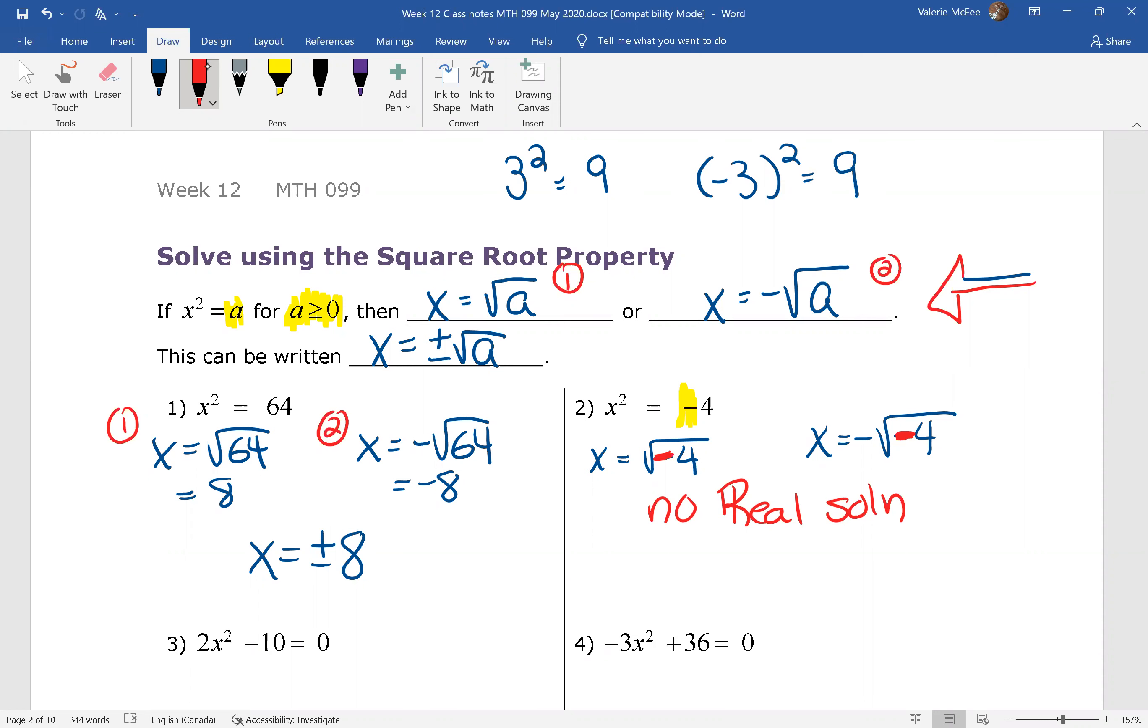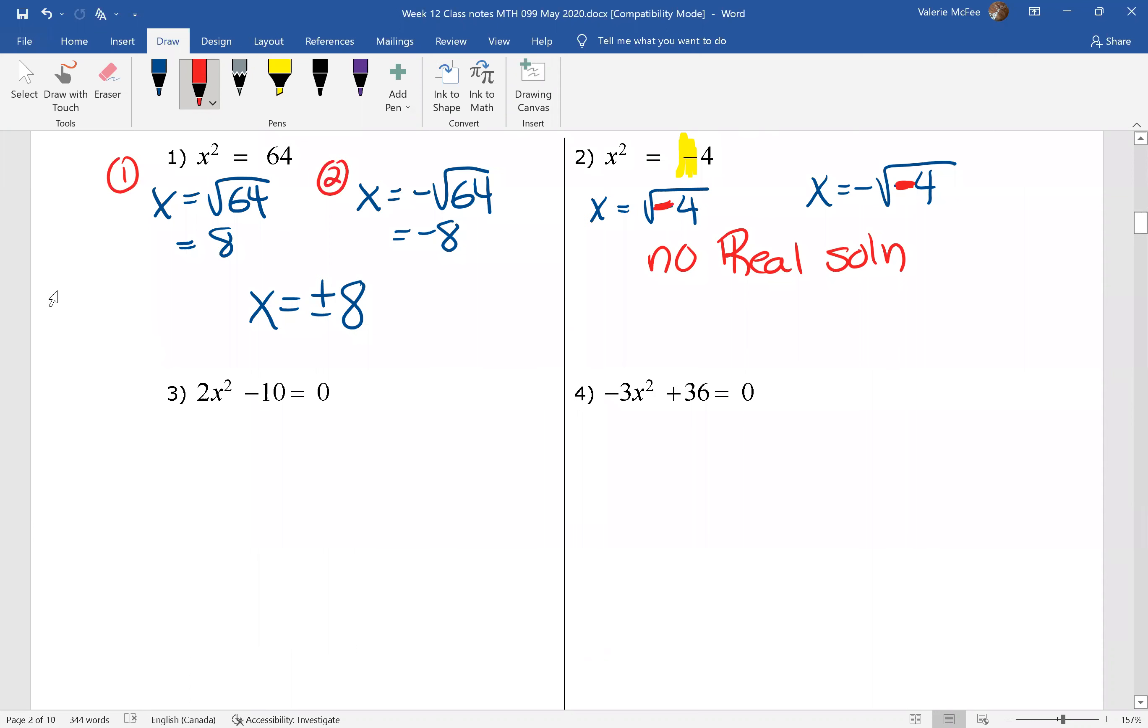Let's try question three. Now question three, actually all of these questions where we're solving using the square root property, is the one time where we don't want our equation to equal zero. We're going to isolate x squared. So the first thing we want to do is add 10 to both sides of our equation, divide by 2, 10 divided by 2 is 5.